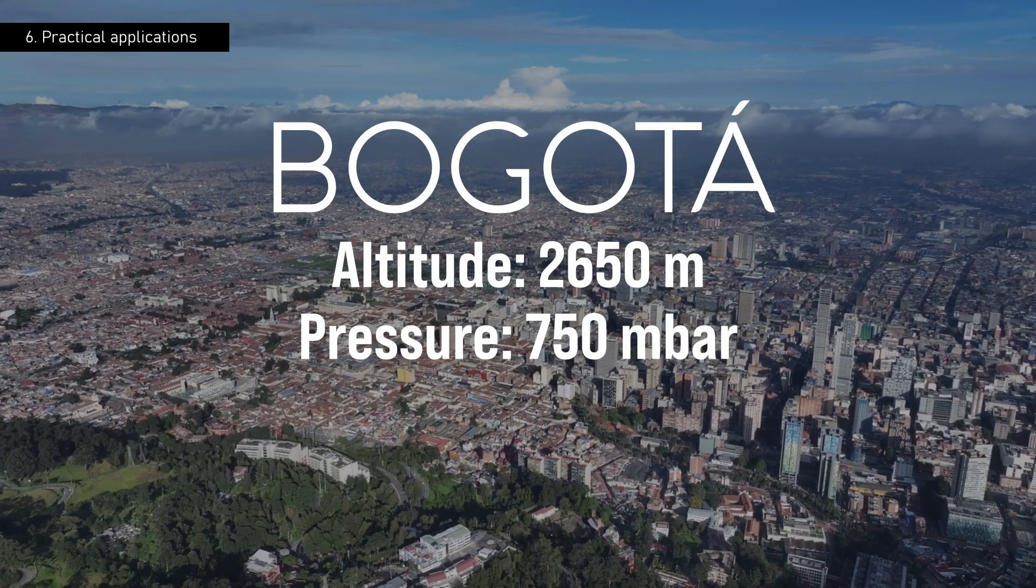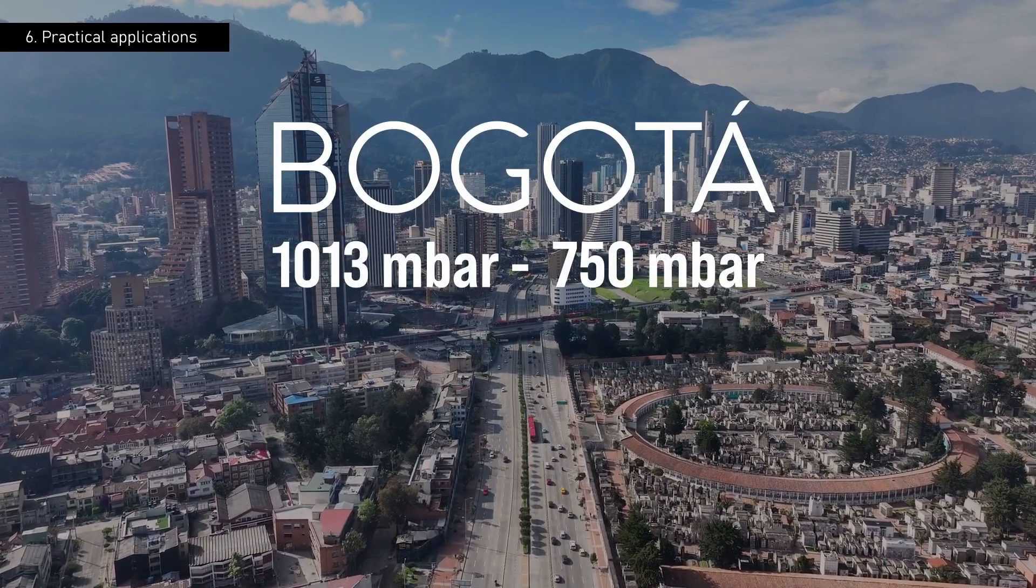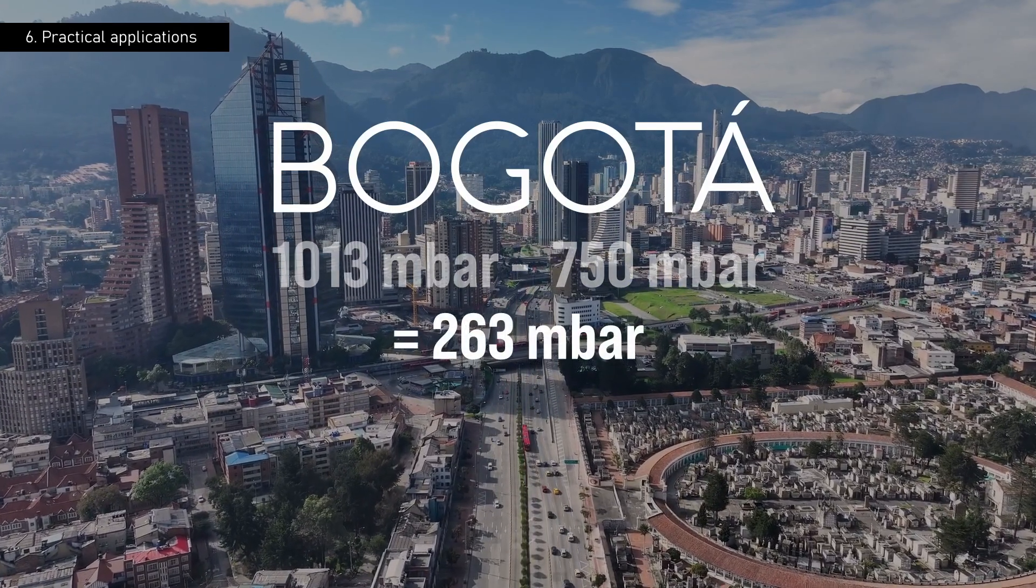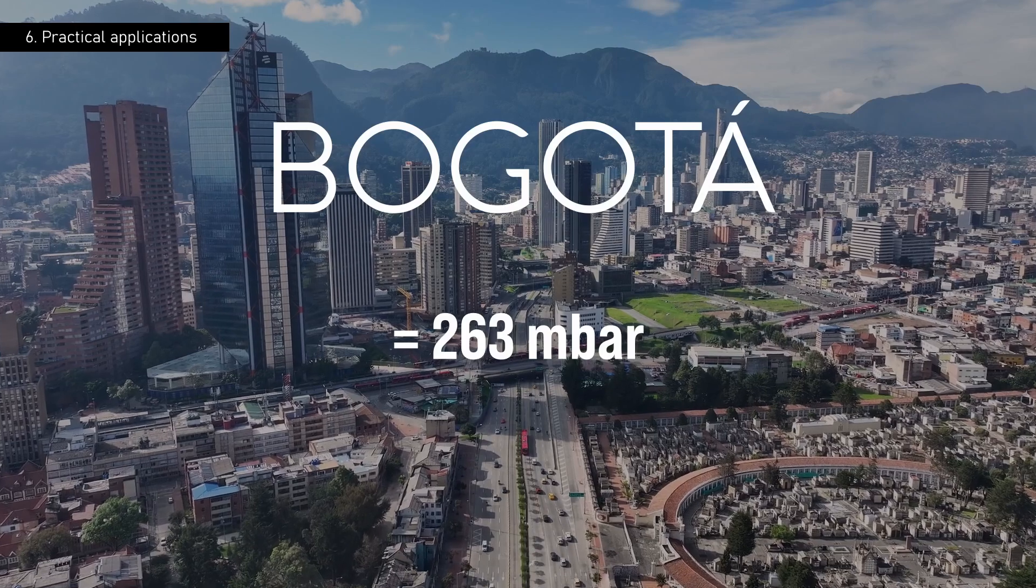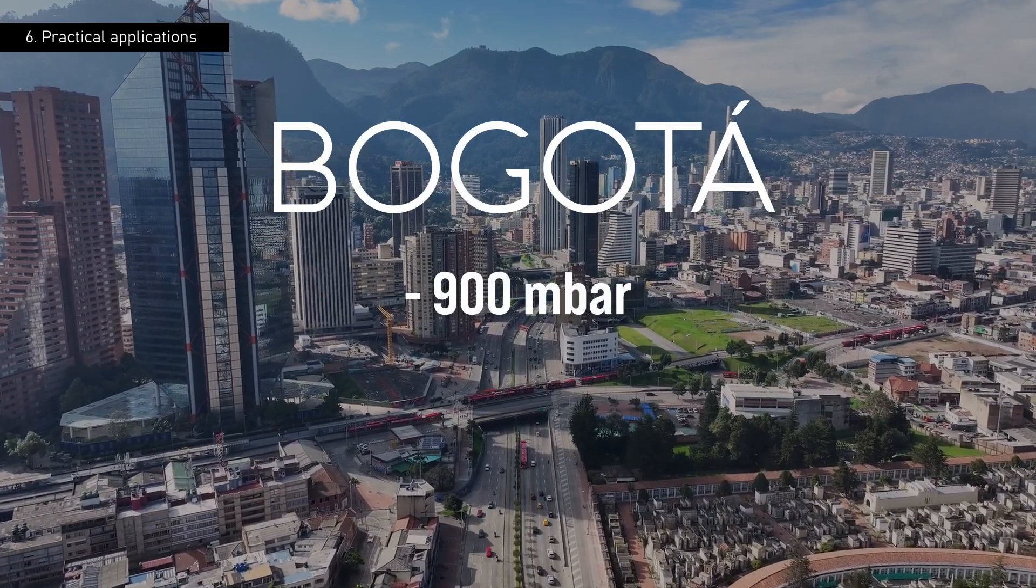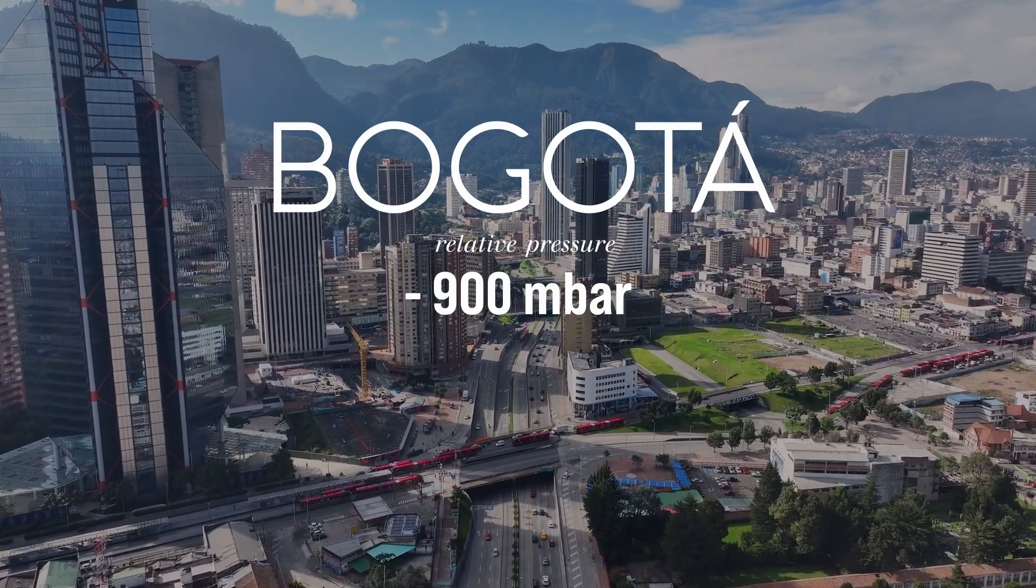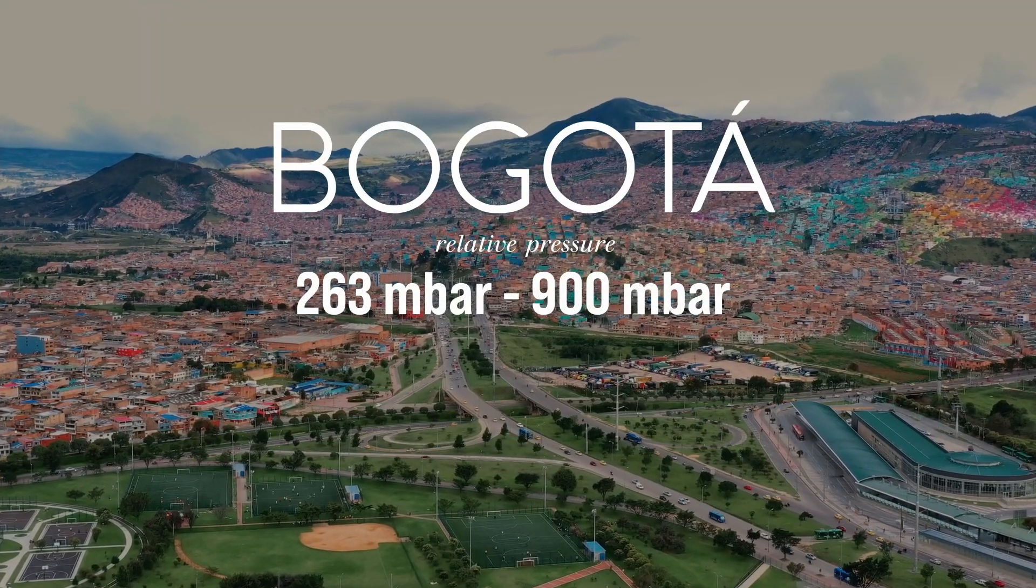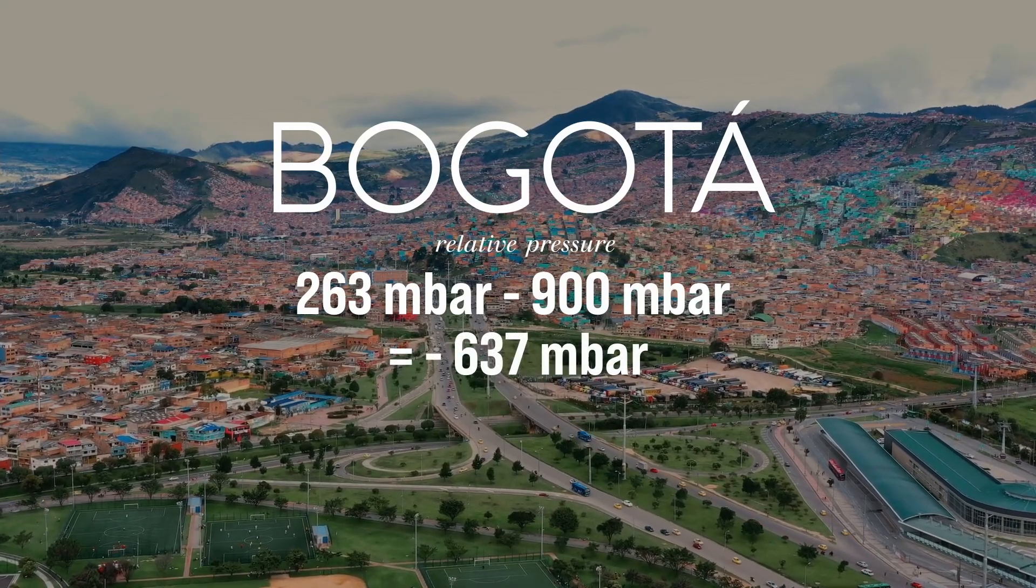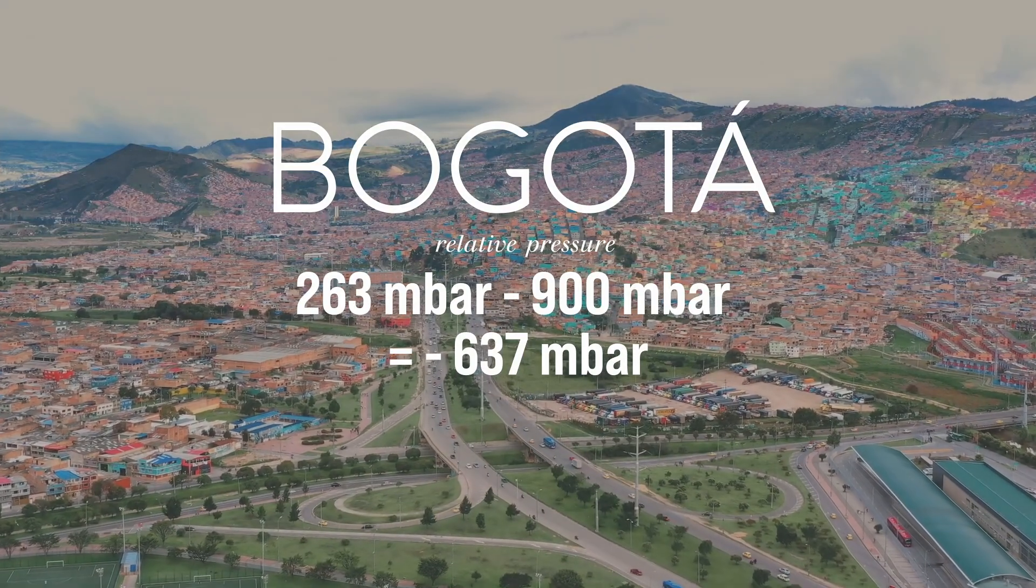First, we must calculate the pressure difference between this city and sea level. 1,013 millibars minus 750 millibars gives us a result of 263 millibars of difference. Let's set this number aside and remember that the vacuum chamber can generate a maximum of minus 900 millibars of relative pressure at sea level. If we subtract the 263 millibars of difference from this number, we get a result of minus 637 millibars. This is the maximum level of vacuum that our pumps can reach, being in the city of Bogota.